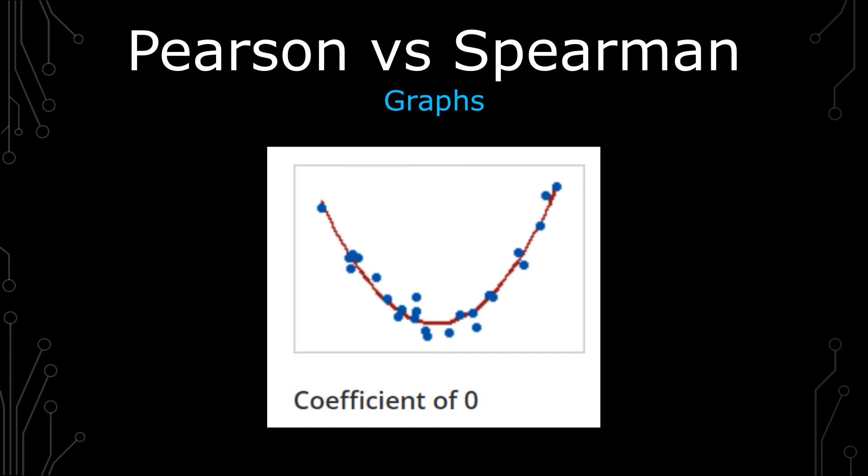The same is for Spearman. The coefficient would be zero because as one variable increases, the other decreases and then increases, which goes against the monotonic relationship.